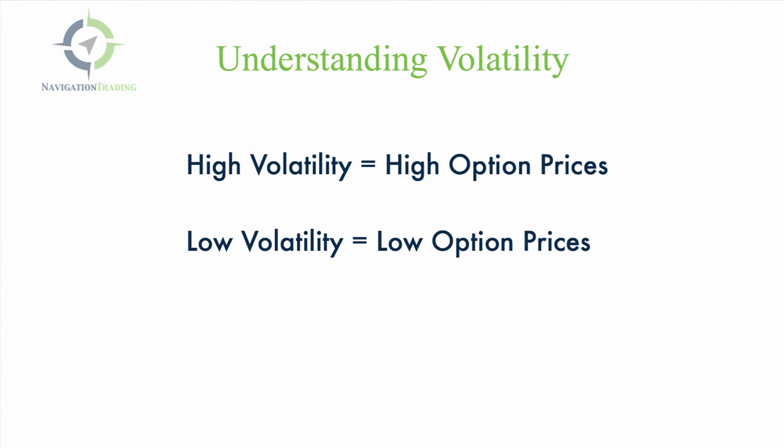Let's talk a little bit more about volatility. When volatility is high, when there is additional fear in the marketplace, that equals higher option prices. High volatility equals high option prices. On the flip side of that, low volatility equals low option prices. If a market is complacent or just grinding along, there's no fear in the marketplace, and typically the option prices of that underlying market are going to be low.